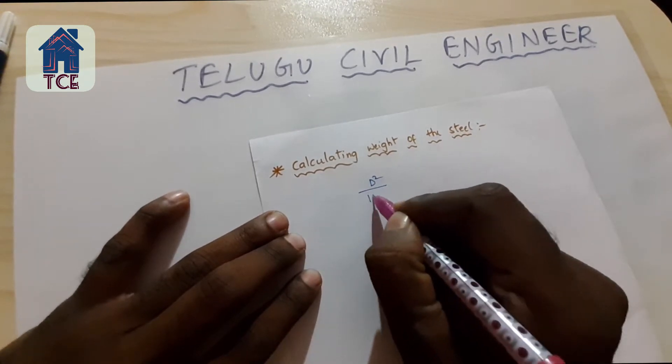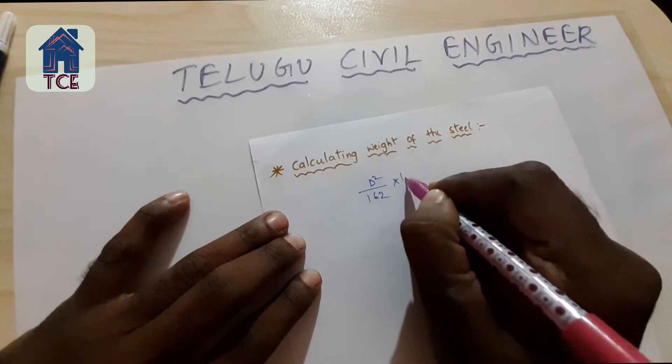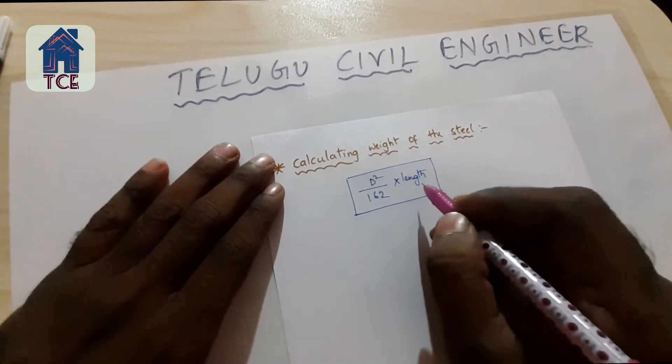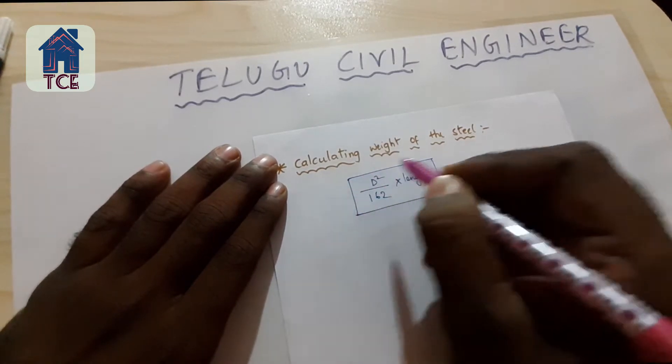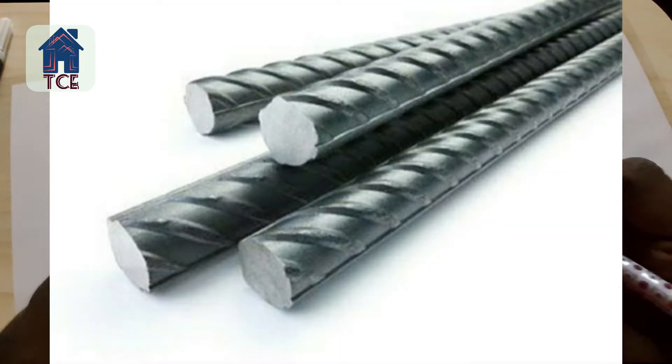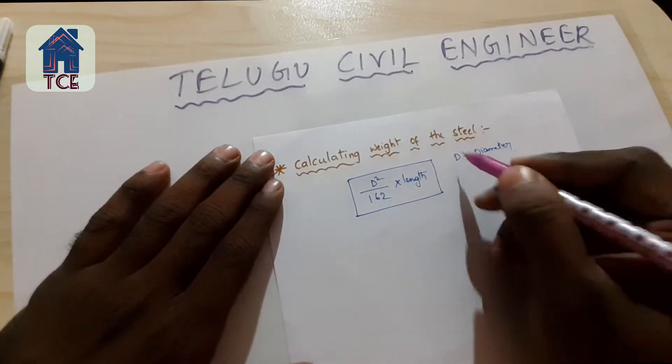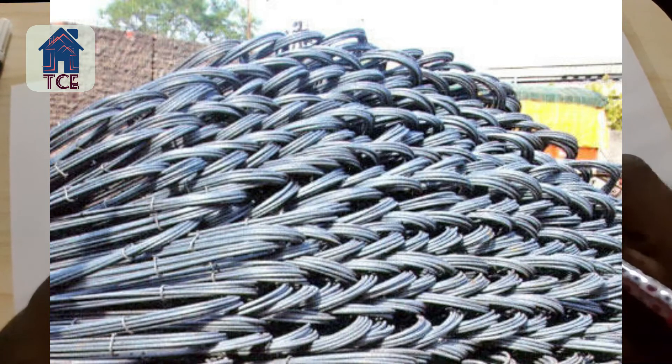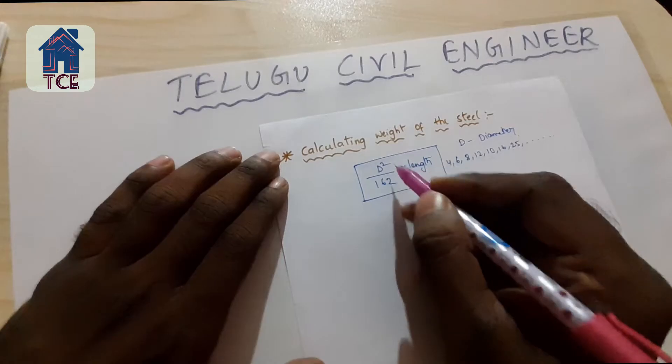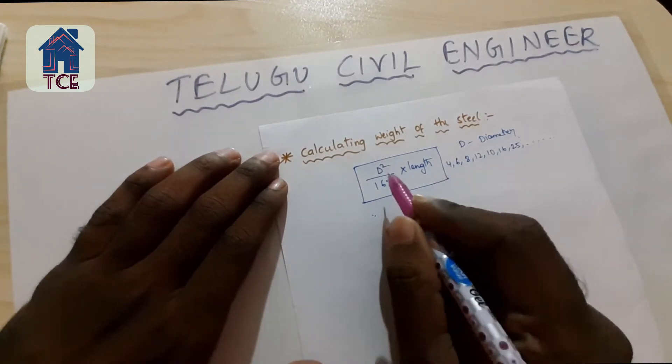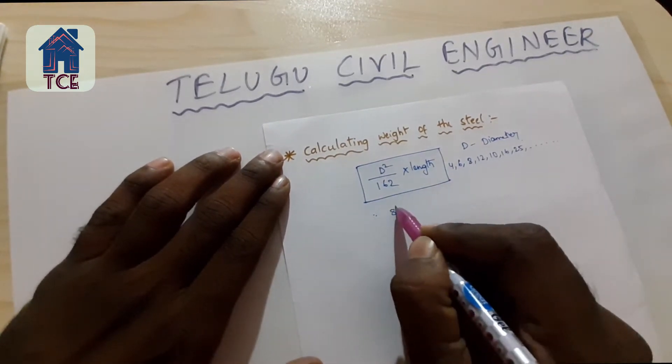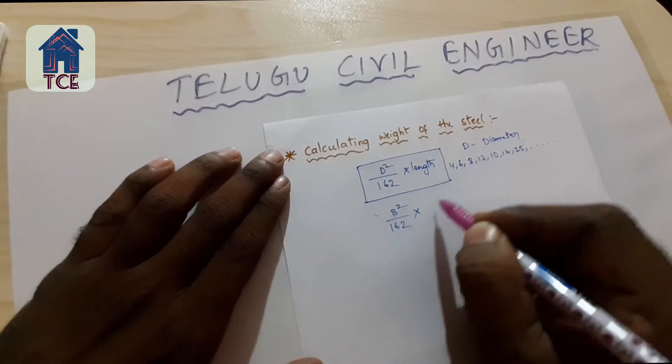d² by 162 into length. This is the equation. Here d is the diameter, length of the rod. This is 4, 6, 8, 10, and this is 16-25. Weight is d² by 162 into length of the rod.